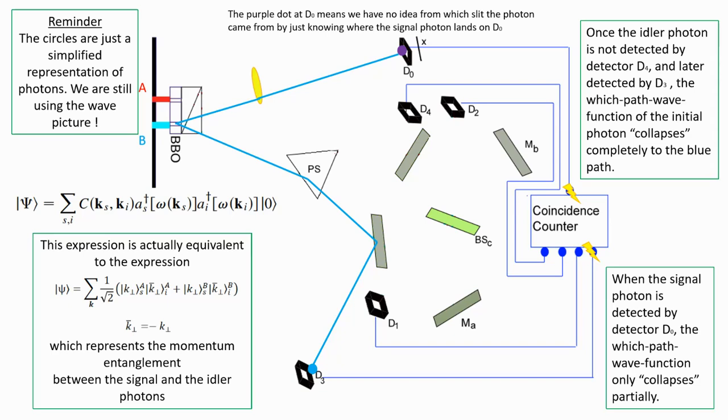When the idler photon is detected, the state collapses completely. Let us see how we can understand this with some mathematics.